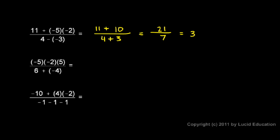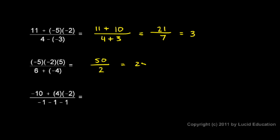The next example: in the numerator we have negative 5 times negative 2 times 5. There are two negative numbers multiplied together, so the result will be positive. 5 times 2 is 10, times 5 is 50, so the numerator is positive 50. The denominator is 6 plus negative 4, which is the same as 6 minus 4, which is 2. So we have 50 over 2, which is simply 25.